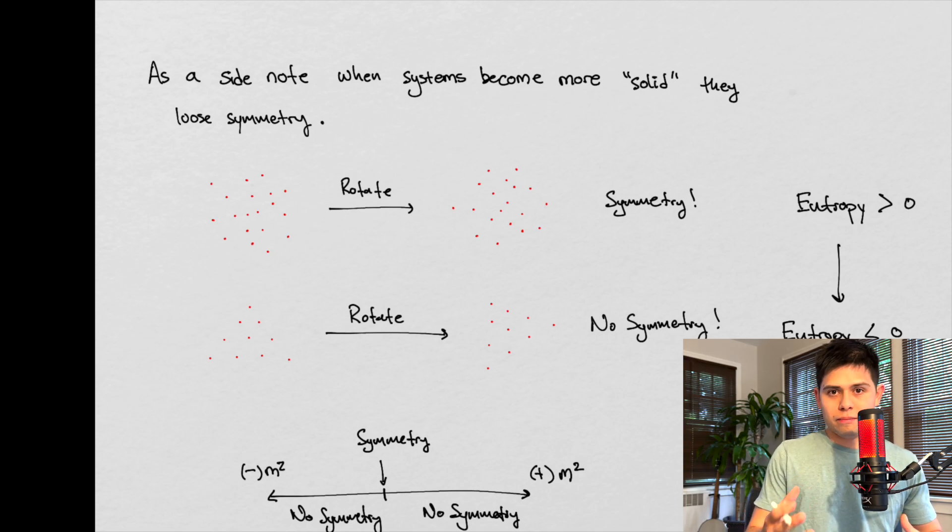when I mention things gaining more mass, say you go from a gas to a solid, well the solid has more mass than the gas. Right? And let's think about this, because, consider a gas, if we consider a gas, it's very random.